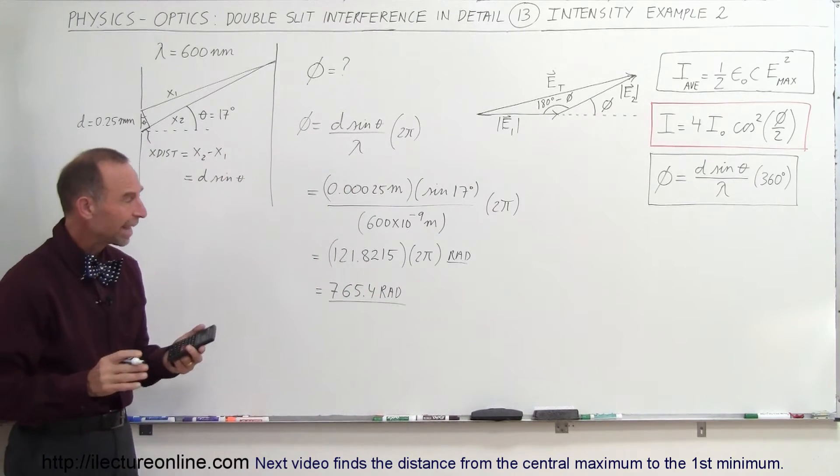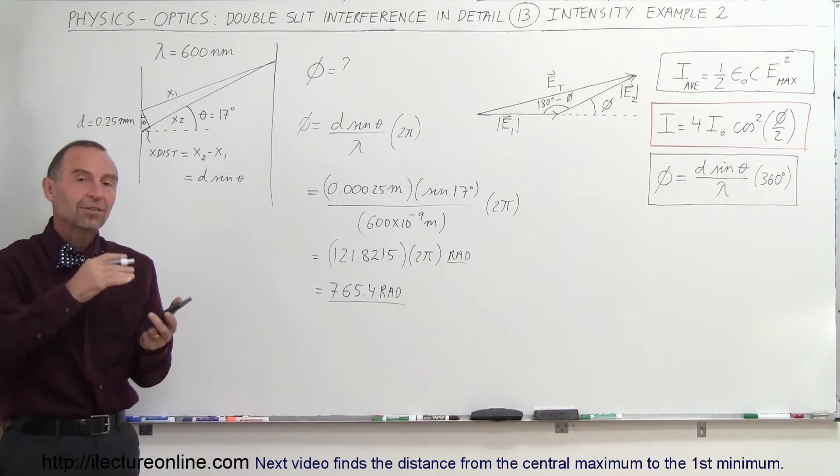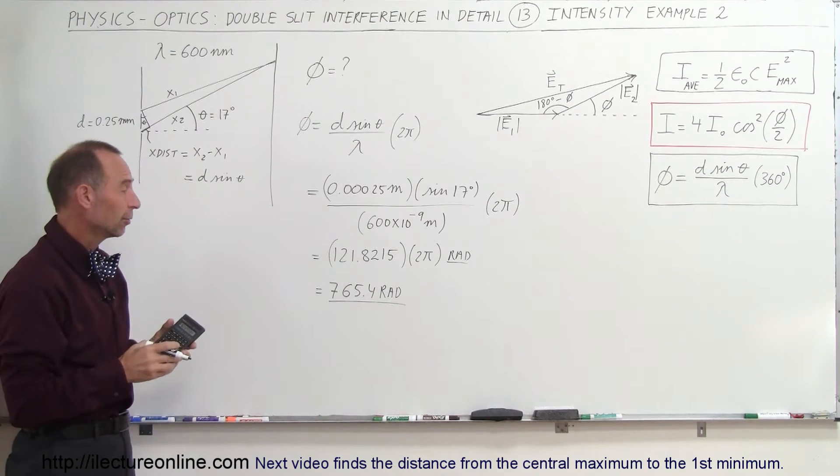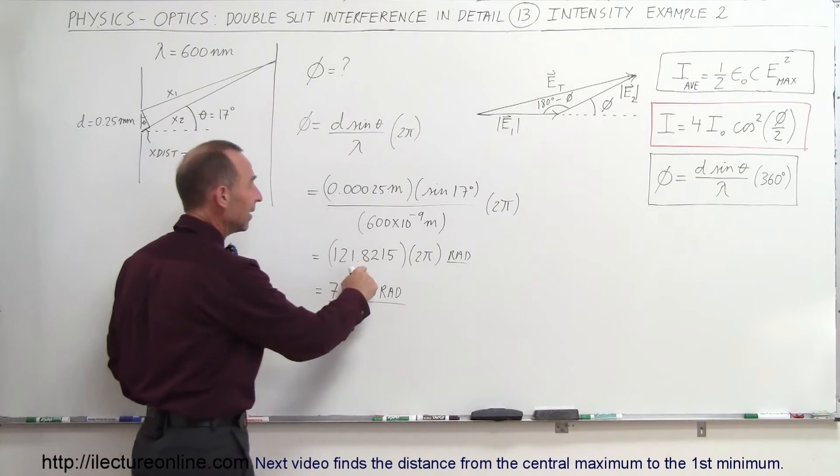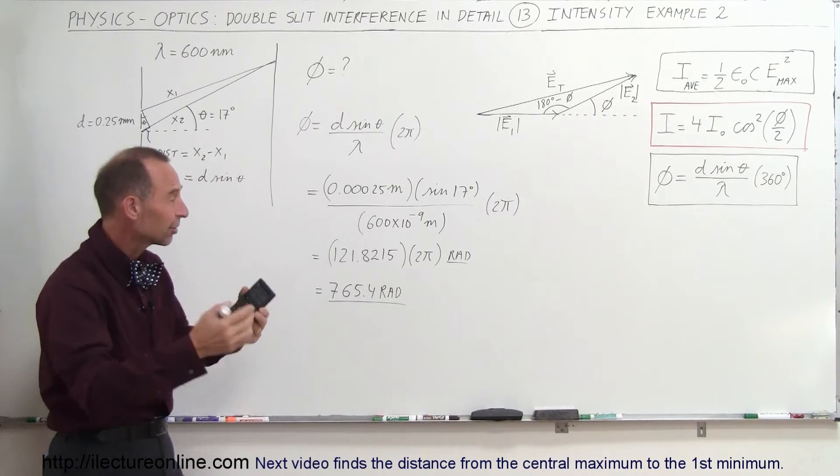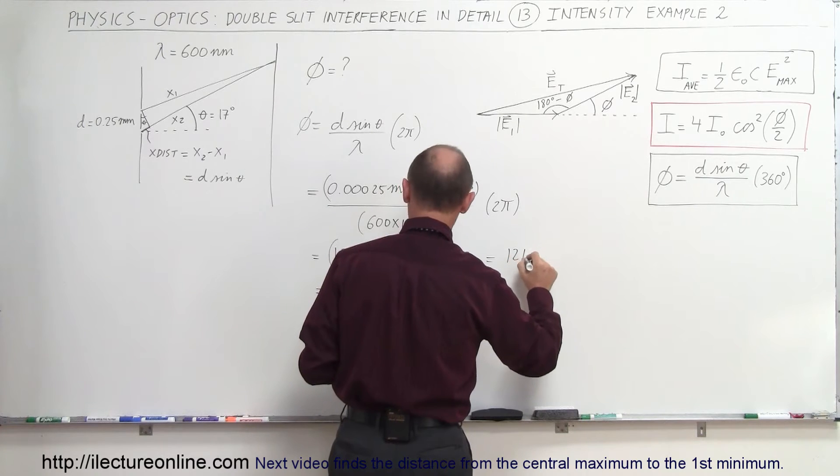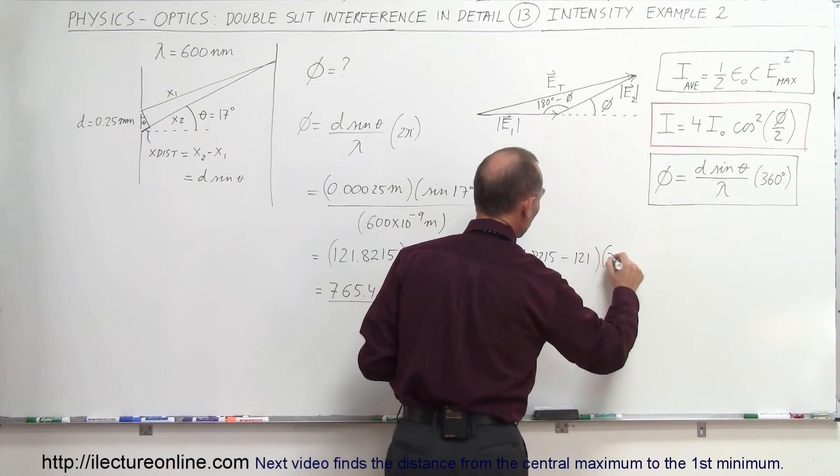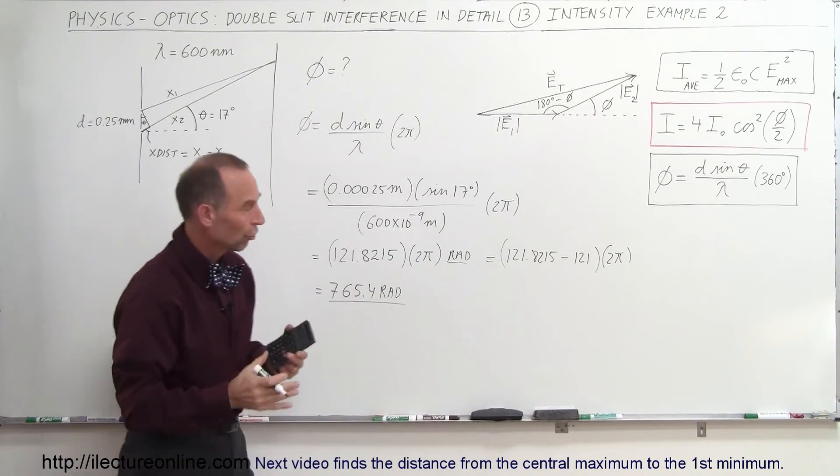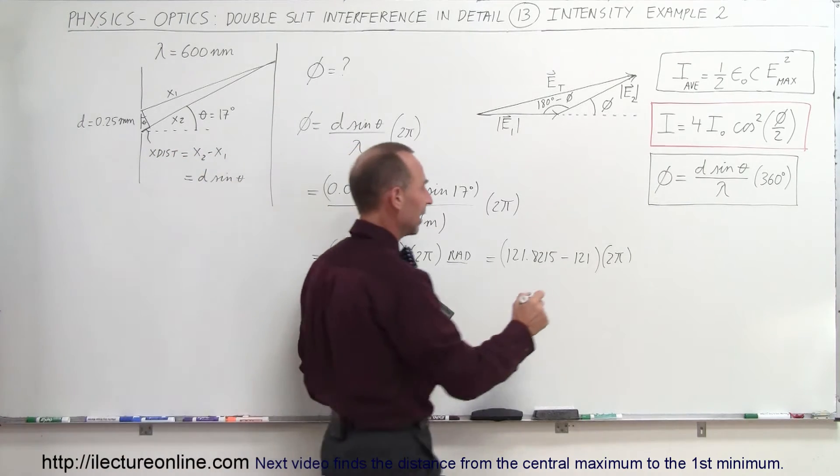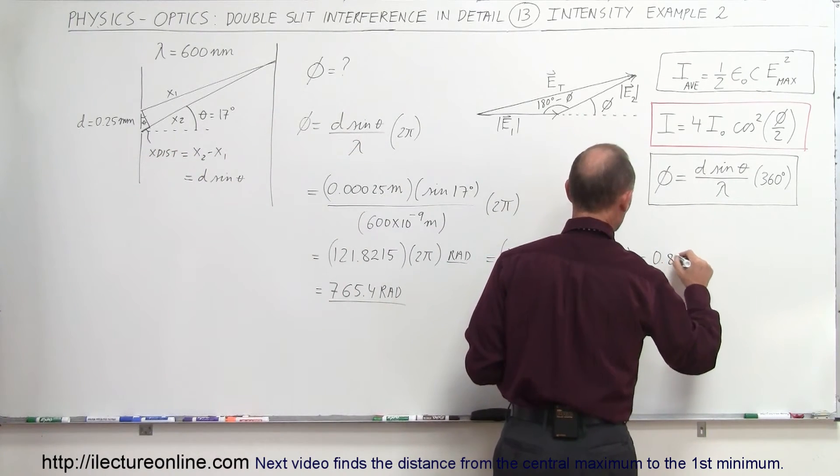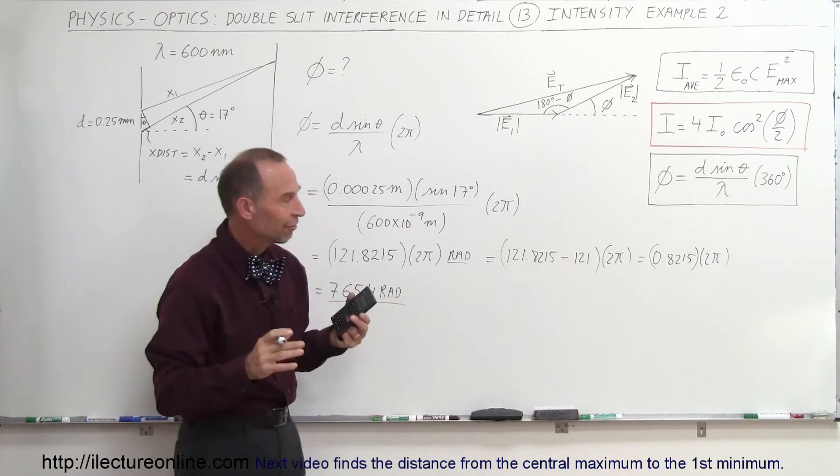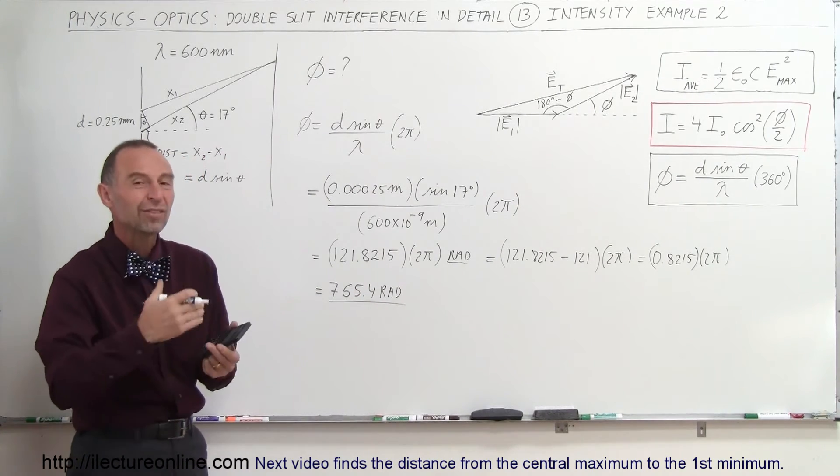That would be the phase difference. Now, of course, any multiple of 2 pi, you get back to the same thing, so if we're going to try to find the intensity at that location, we don't really need to work with 765.4 radians. We can simply say that this, as far as the phase difference of two waves coming together, can be said to be equal to 121.8215 minus 121 times 2 pi. So we can take the whole integer away from that number. That's equal to 0.8215 times 2 pi radians, and now it becomes a fraction between 0 and 1 wavelength or between 0 and 2 pi radians.